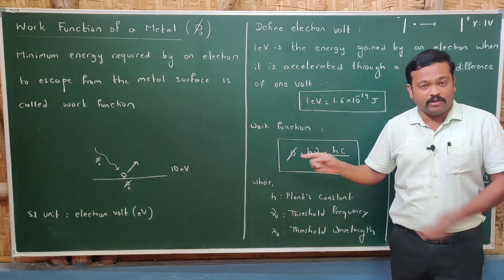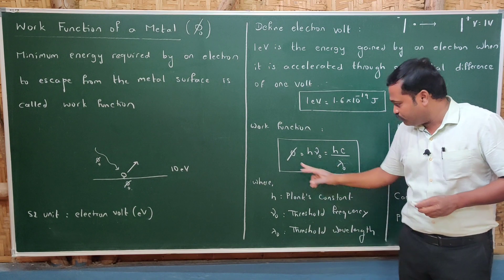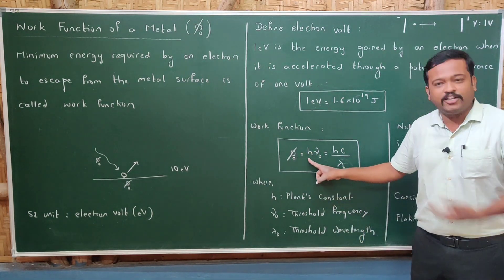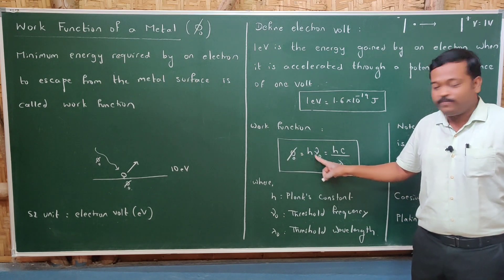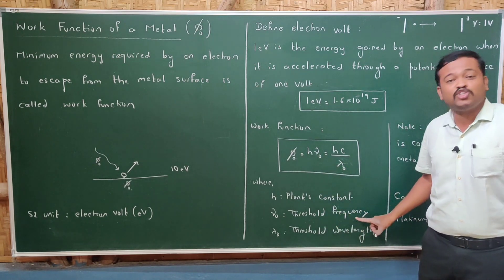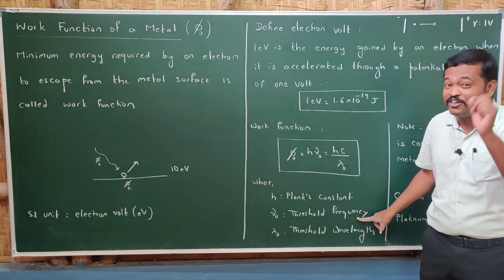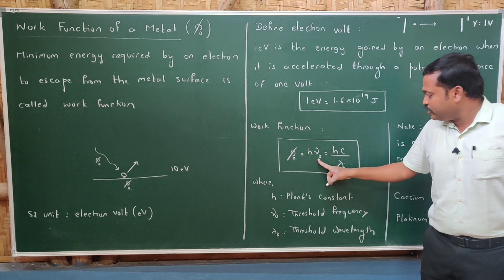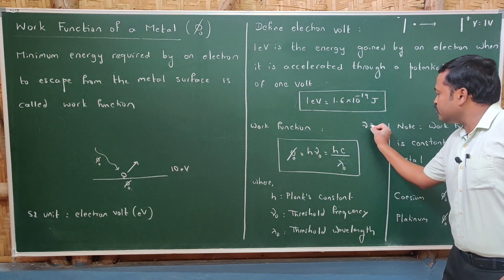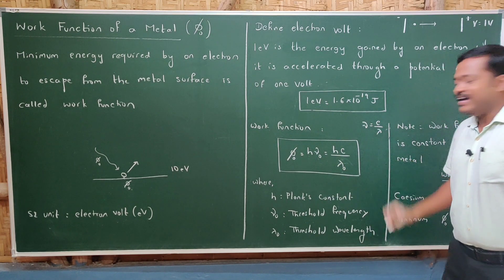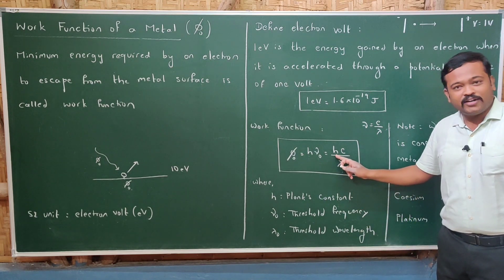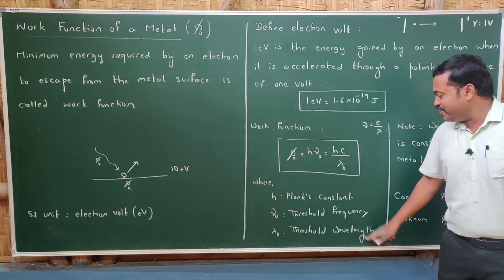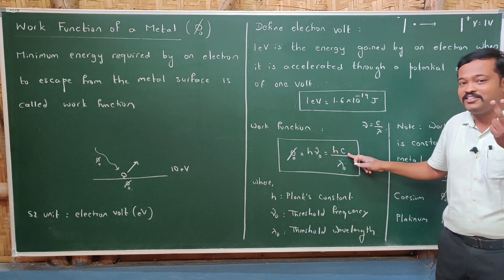Now we will write the expression for work function. Work function is denoted by φ₀, and the formula is φ₀ equals hν₀, where h is Planck's constant and ν₀ is the threshold frequency — that is, the minimum frequency. You can also write it in terms of wavelength as φ₀ equals hc divided by λ₀, where λ₀ is the threshold wavelength and c is the speed of light in vacuum.